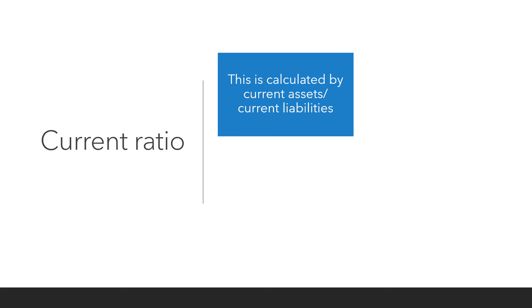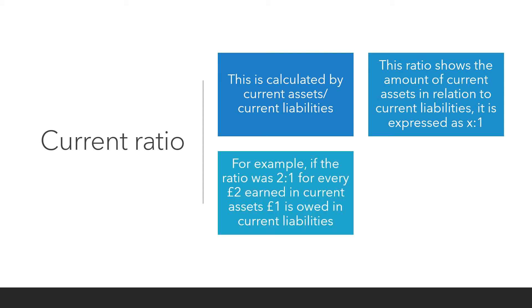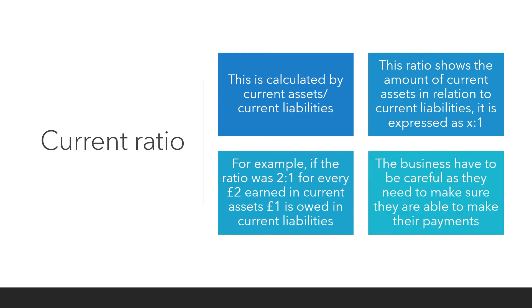The current ratio is calculated by doing current assets divided by current liabilities. This ratio shows the amount of current assets in relation to current liabilities, expressed as a number — for example, 2 to 1. So for every two pounds in current assets, one pound is owed in current liabilities. The business has to be careful to ensure they are able to make their payments.